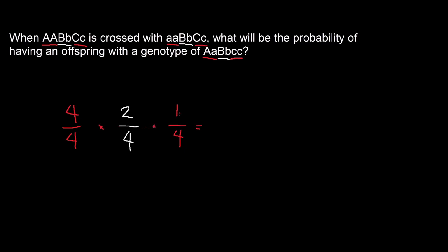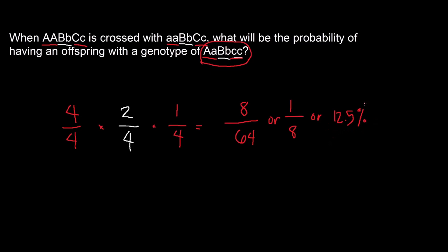Now we can multiply them all together to get the probability of having an offspring with this genotype: four times two is eight, times one is still eight, over four cubed which is 64 — giving us one over eight, or 12.5%. That is the probability of having an offspring with this genotype.